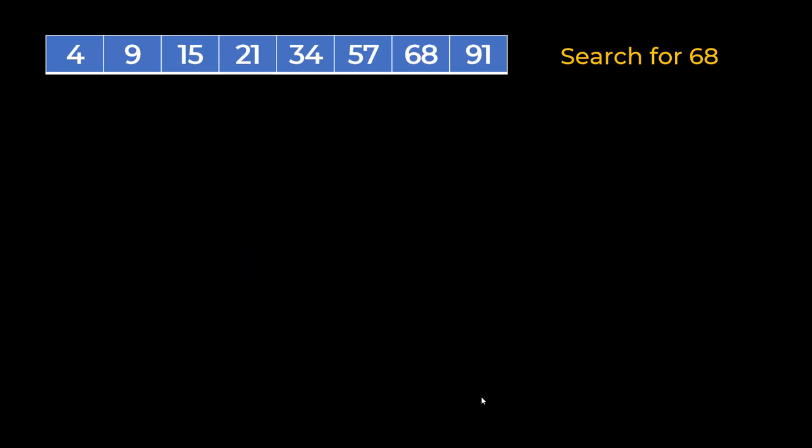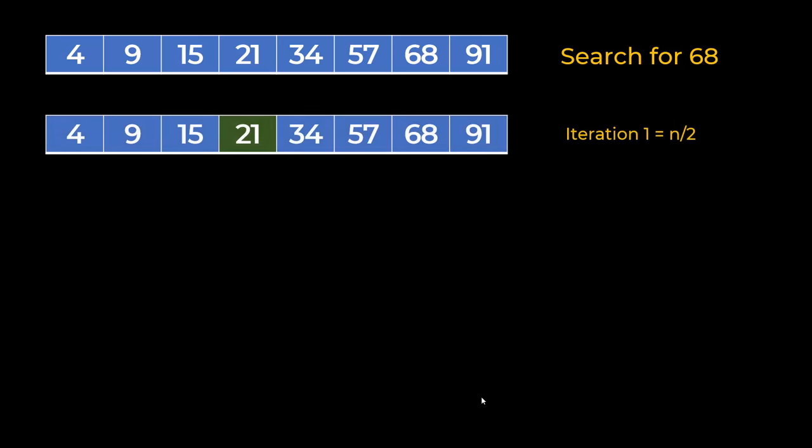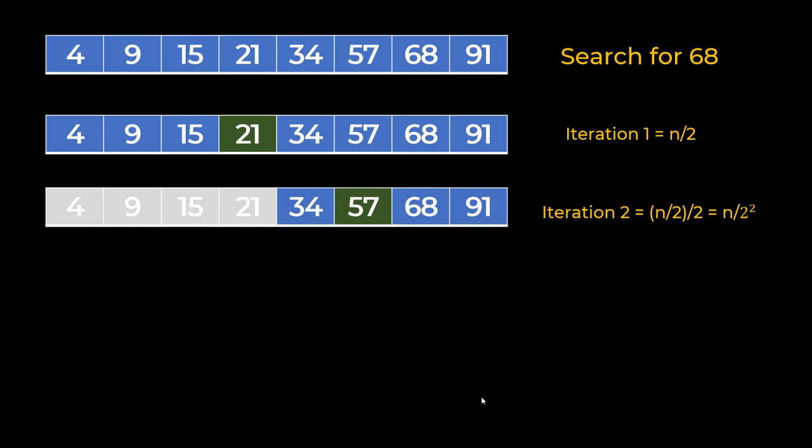In this what you do is you first find the middle element which is 21, you compare it against 68, you find out that 21 is less than 68, hence you now discard the array on the left hand side. So number 4 to 21 you discard it, and now what you have is 34 to 91. In that array also you find the middle element, so basically in each iteration you're dividing the array by 2.